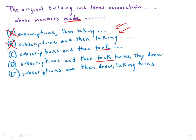In E, we have made the payment and then drew. So this is kind of odd. It's the wrong verb in the second half of the parallel.